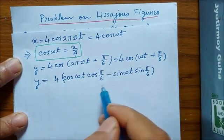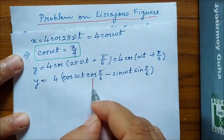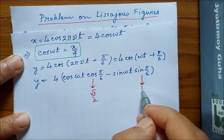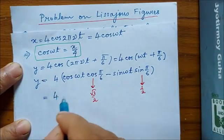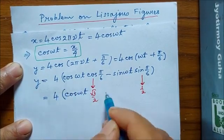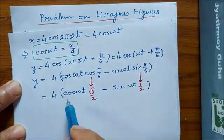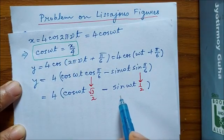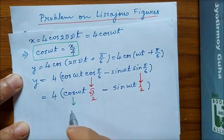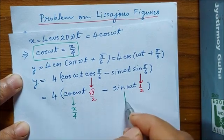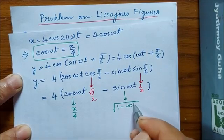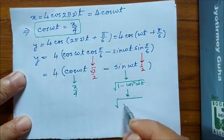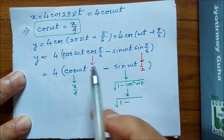Using the well-known trigonometric formula, cos π by 6 is √3 by 2, while sin π by 6 is sin 30 which is half. Let us complete this line. Again, cos ωt can be replaced by x by 4, and we can write sin ωt as √(1 - cos² ωt). This gives √(1 - (x/4)²).